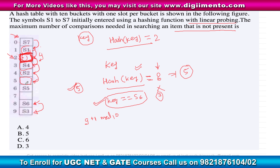If the hash gives position 6, we compare at slot 6, then probe to slot 7 which is empty — only two comparisons. Since starting at position 8 gives us five comparisons, which is the highest we can achieve, five is the maximum number of comparisons. The answer is B.